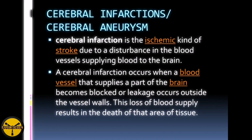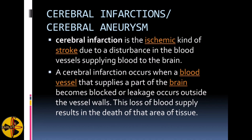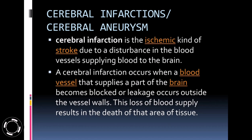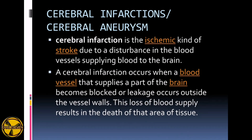Cerebral infarction is the ischemic kind of stroke due to disturbance in the blood vessels supplying blood to the brain. A cerebral infarction occurs when a blood vessel that supplies a part of the brain becomes blocked, or leakage occurs outside the vessel walls.